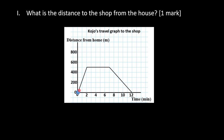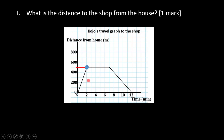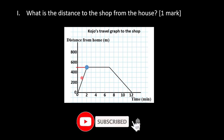He moved until he got to a stop — that must have been the shop. This point you see here represents his stopping point. These kinds of questions are easy because you just need to trace from the graph. If we drop a horizontal line intersecting the vertical axis, we can read from point zero to that particular point. This graph uses a scale of 200 meters to 2 centimeters on the vertical axis.